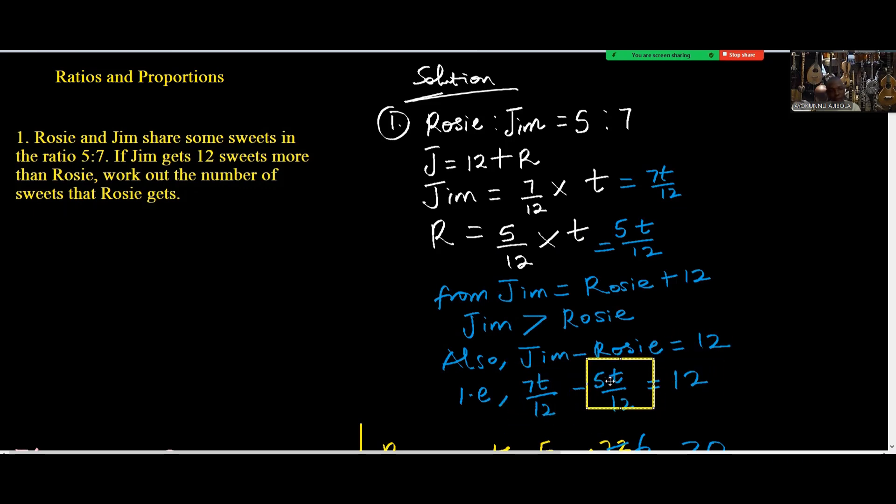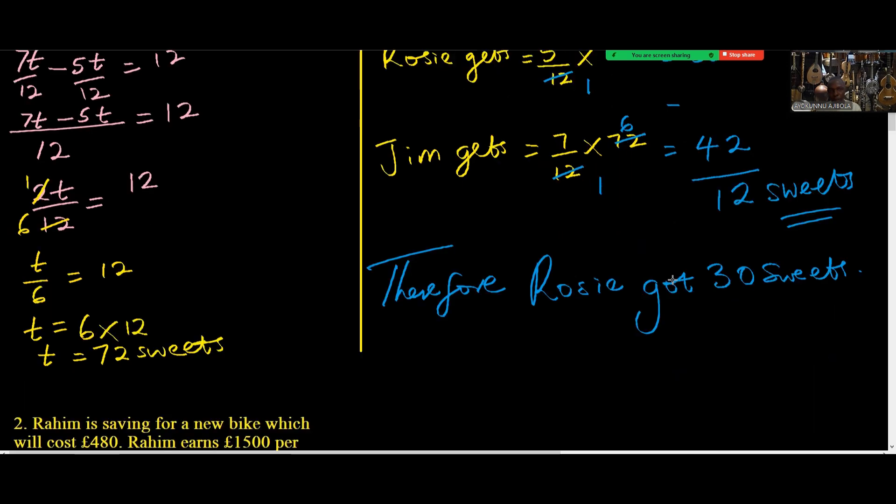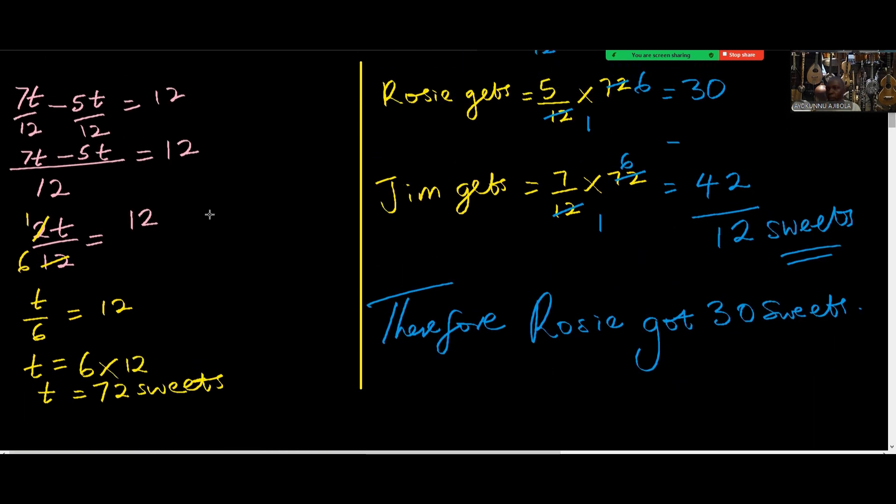So 7t over 12 minus 5t over 12 equals 12. With that we can solve for t. Find the LCM which is 12, then 7 minus 5t, that's 2t. So 2t over 12 gives us t over 6 and equals 12.